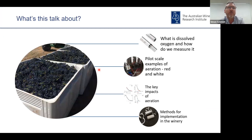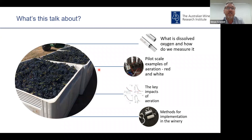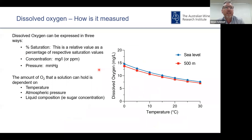The contents of this talk: primarily I want to begin with discussing what dissolved oxygen is, how we measure it, and some options for measuring it. I want to give some pilot-scale examples of aeration in red and white ferments and discuss the key impacts. Finally, I want to round out the talk with some methods for implementation that you can use in the winery. So, dissolved oxygen — as the name suggests, it's the amount of oxygen that's dissolved in a liquid.